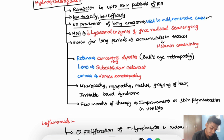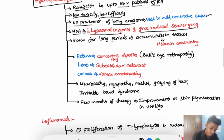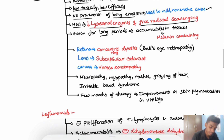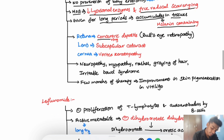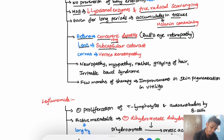The mechanism of hydroxychloroquine is through decrease in lysosomal enzymes and free radical scavenging. If given for long periods, it accumulates in tissues, mainly melanin-containing tissues. It can cause concentric ring deposits in the retina, known as bullseye retinopathy. In the lens, it can cause subcapsular cataract, and in the cornea, it causes vortex keratopathy.